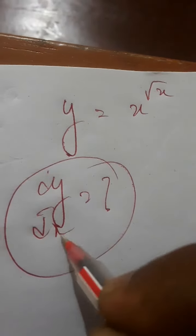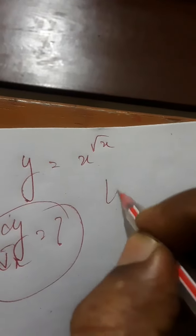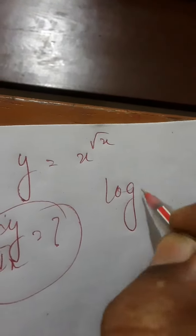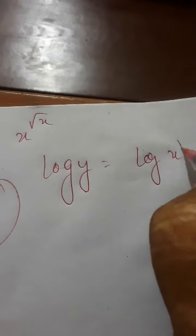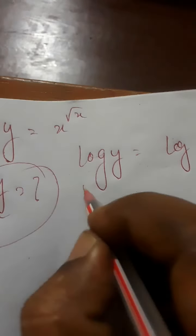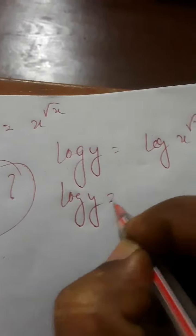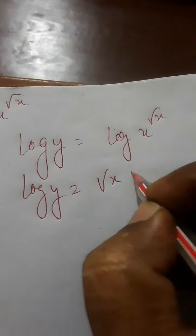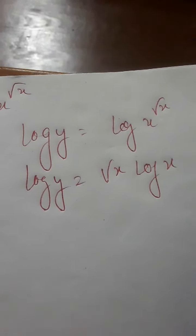To find dy by dx, first we should apply log on both sides. So this equation will become log of y is equal to log of x to the power of root x, which becomes log y is equal to root x into log x.